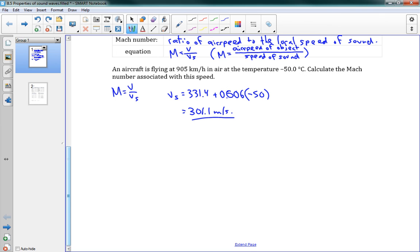And now we need to convert our 905 kilometers per hour. We need to work in meters per second. So V is equal to 905 kilometers per hour. And I have to convert this now. So I have 1000 meters in a kilometer. And I have 3600 seconds. That 3600 should be on the bottom. So one kilometer. And then we've got one hour, 3600 seconds. And that comes out to 251.4 meters per second. We need to use those two numbers now. We get M is equal to 251.4 divided by 301.1. We get 0.835.